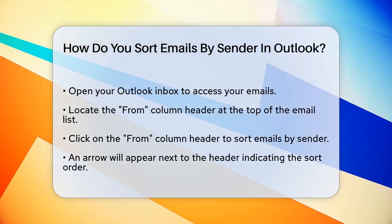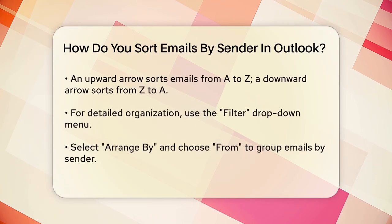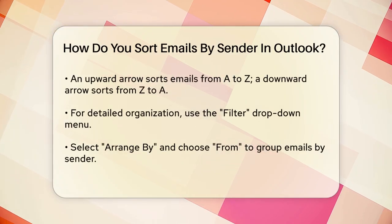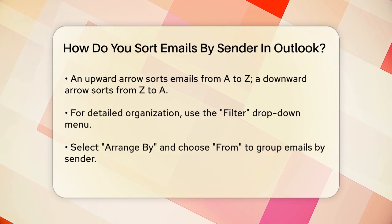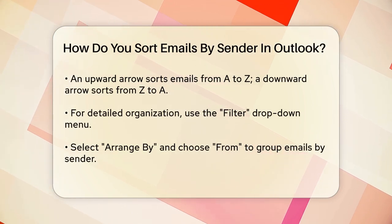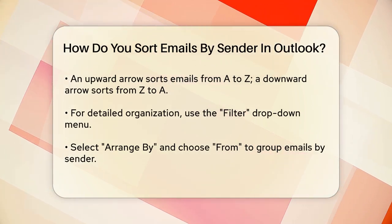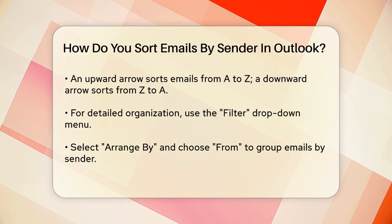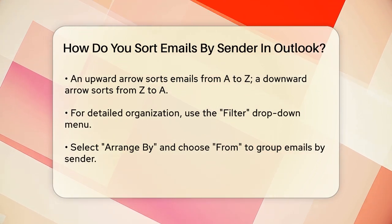When you do this, you'll see an arrow appear next to the header. If the arrow points up, your emails will be sorted in alphabetical order from A to Z. If the arrow points down, the order will be reversed from Z to A.